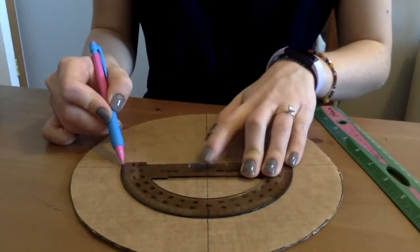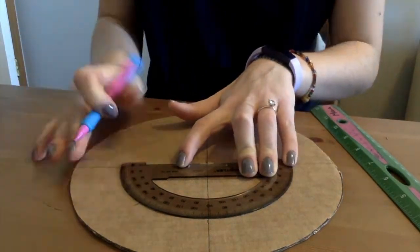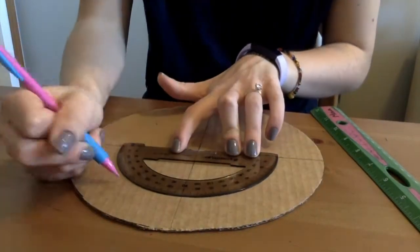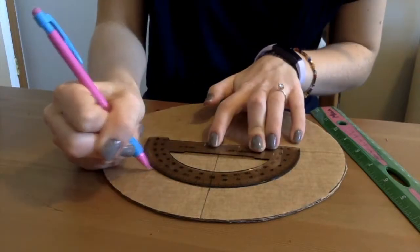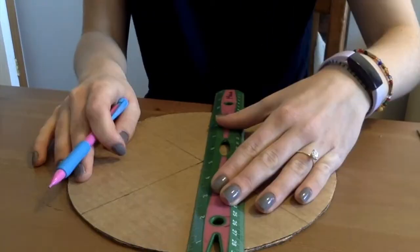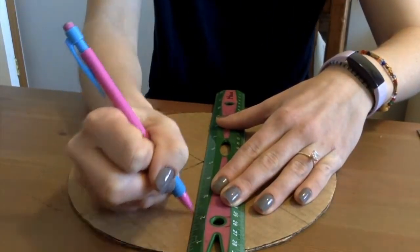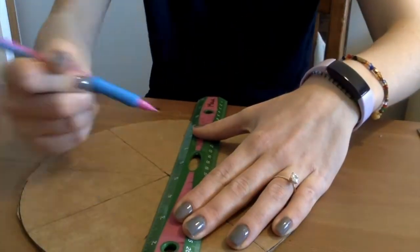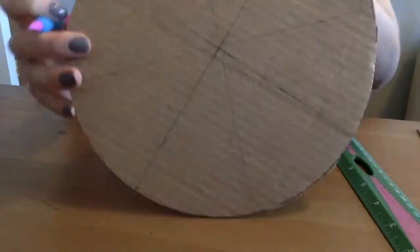Next we will divide our circle into eighths by lining up our protractor again and finding the 45 degree angle for each line. We will connect these lines too and make sure that our wind vane base is divided into eight different sections and that it looks sort of like a pizza or a pie or something like that.